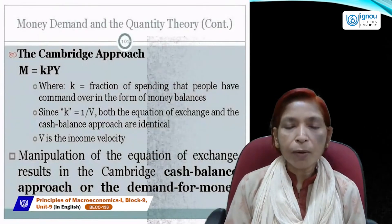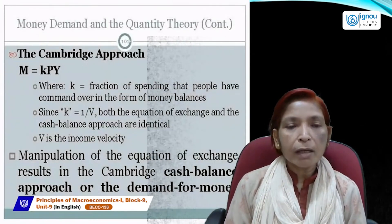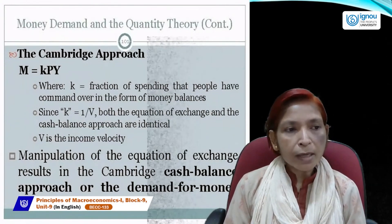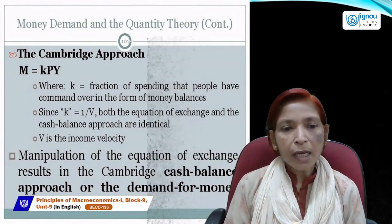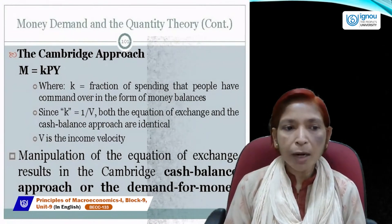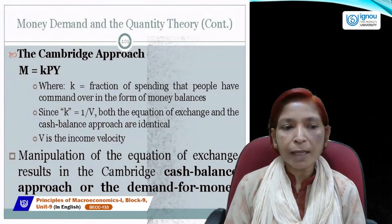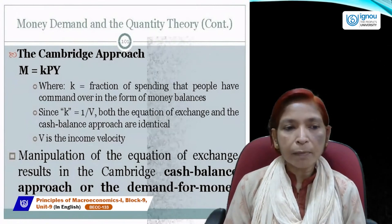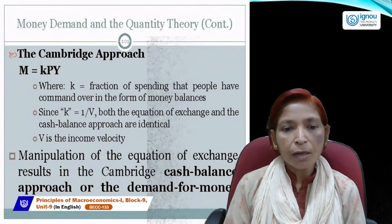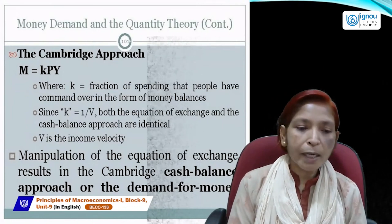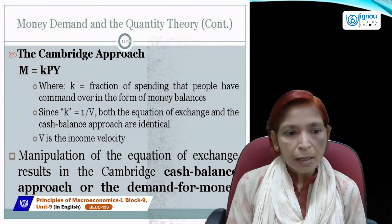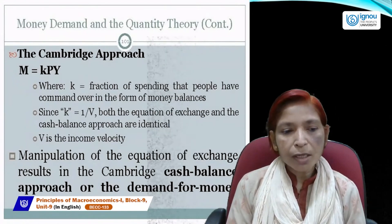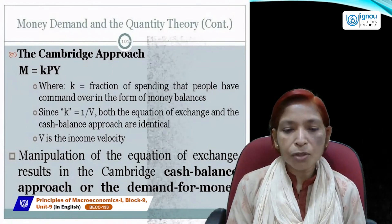According to the Cambridge approach, M = KP·Y, where K is the fraction of spending that people have command over in the form of money balances. K can be calculated by dividing 1 by V. Both the equation of exchange and the cash balance approach are identical; manipulation of the equation of exchange results in the Cambridge cash balance demand for money equation.